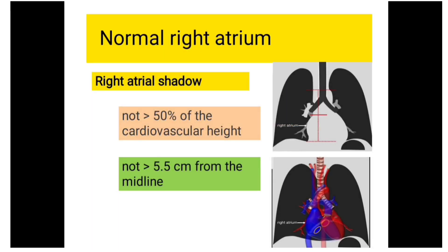Normally, the right atrial shadow — the convexity in the lower half of the right mediastinal cardiovascular border — is usually not more than 50% of the cardiovascular height, and not more than 5.5 cm from the midline.